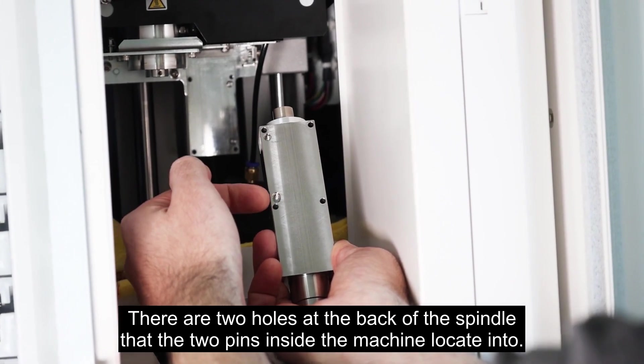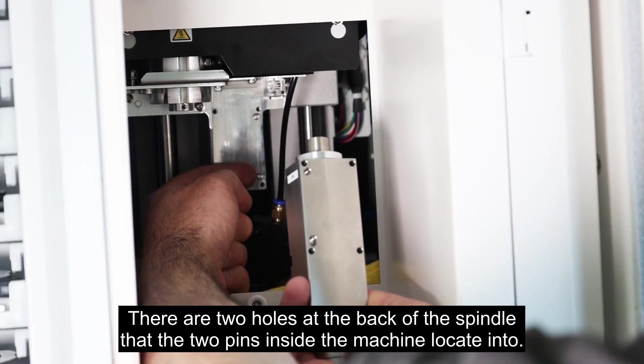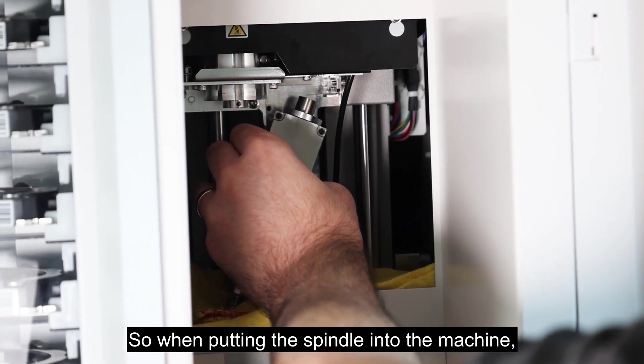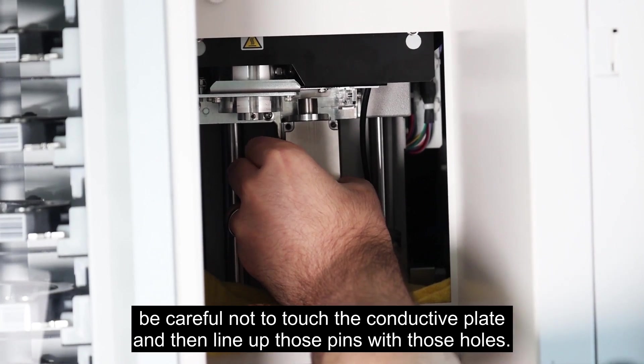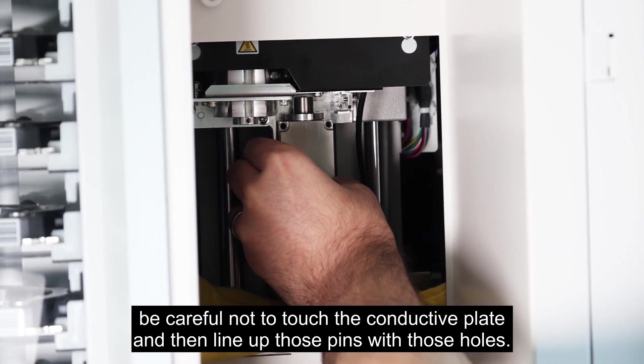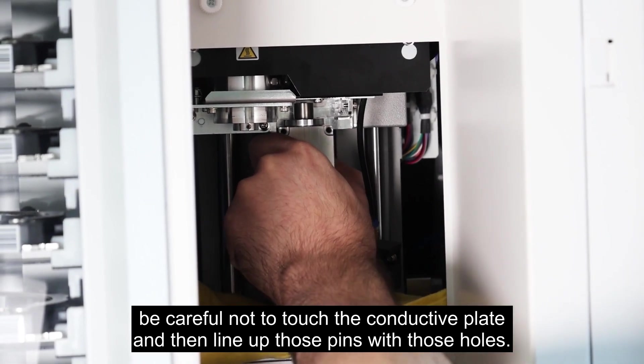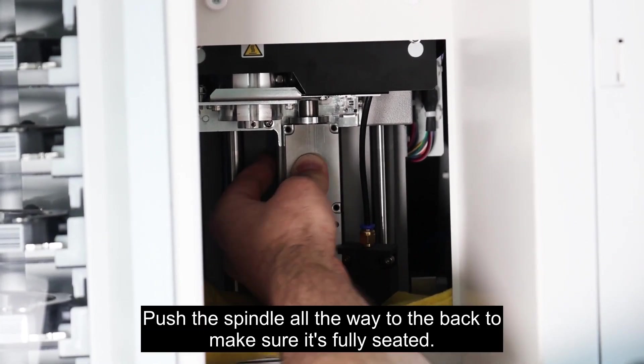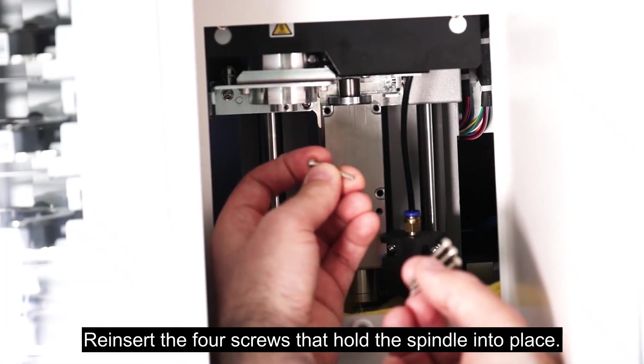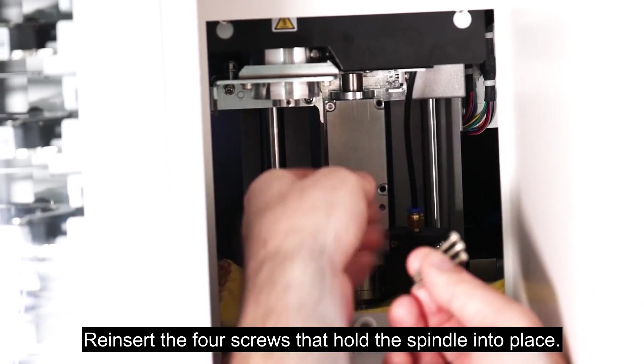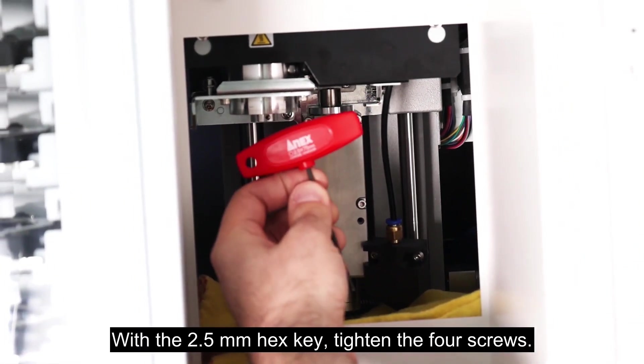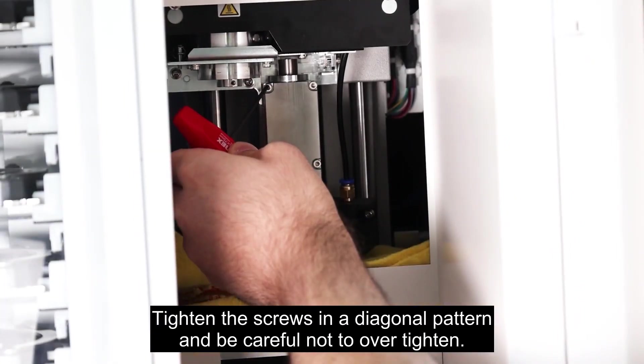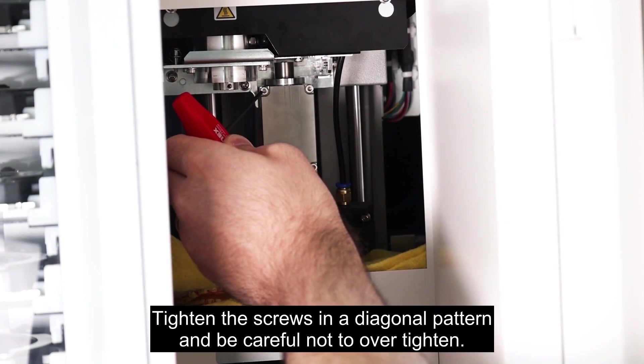There are two holes at the back of the spindle that the two pins inside the machine locate into. So when putting the spindle into the machine, be careful not to touch the conductive plate and then line up those pins with those holes. Push the spindle all the way to the back to make sure it's fully seated. Reinsert the four screws that hold the spindle into place. With the 2.5 millimeter hex key, tighten the four screws.